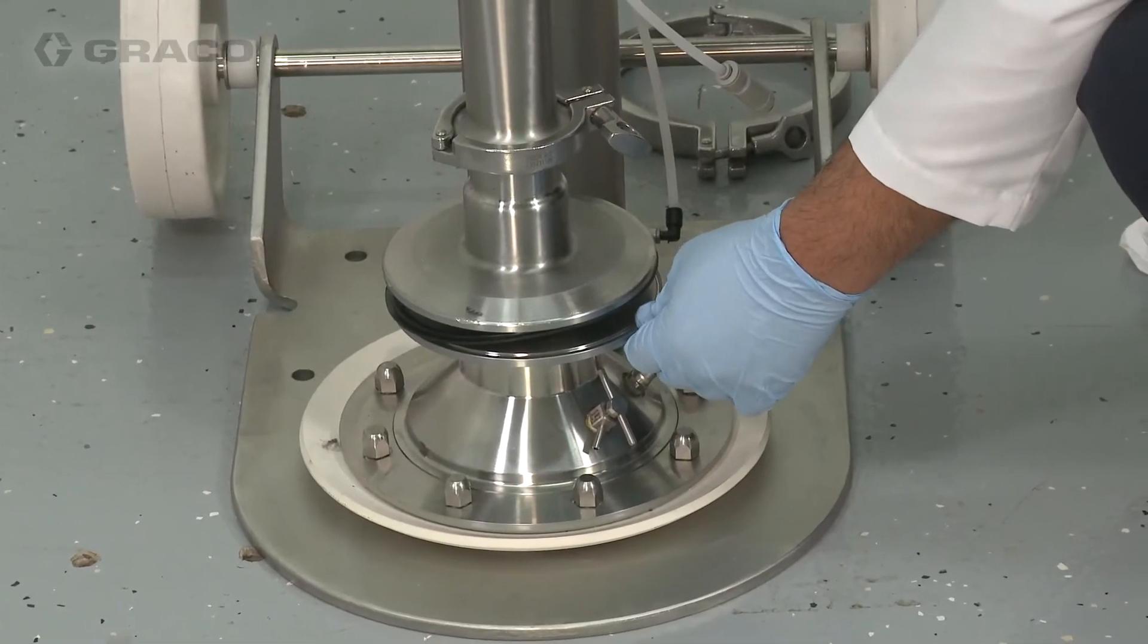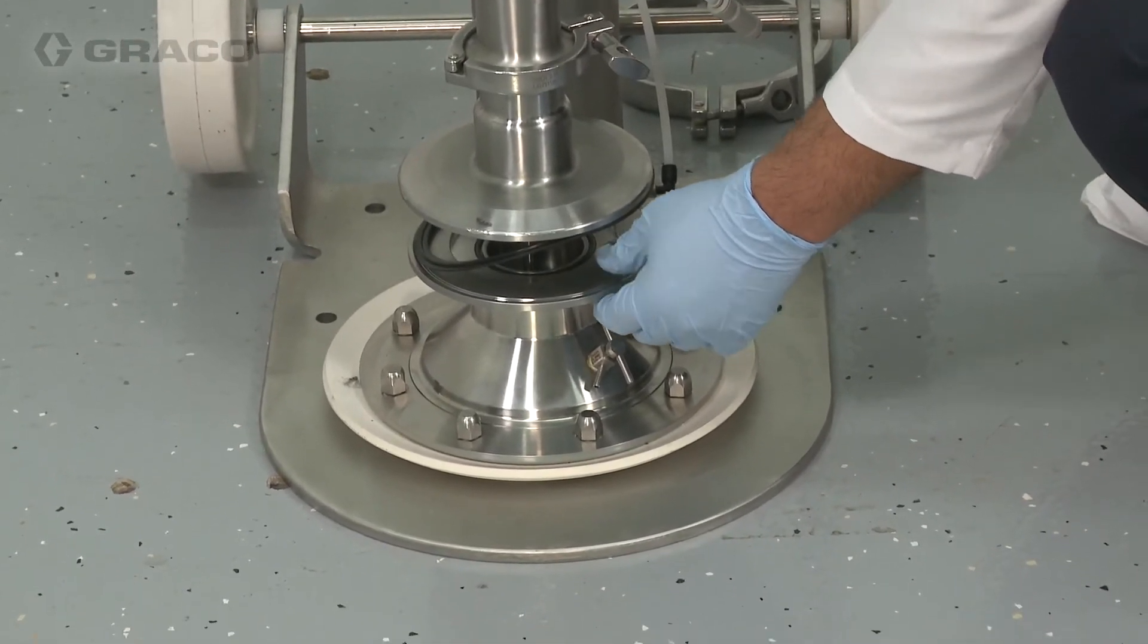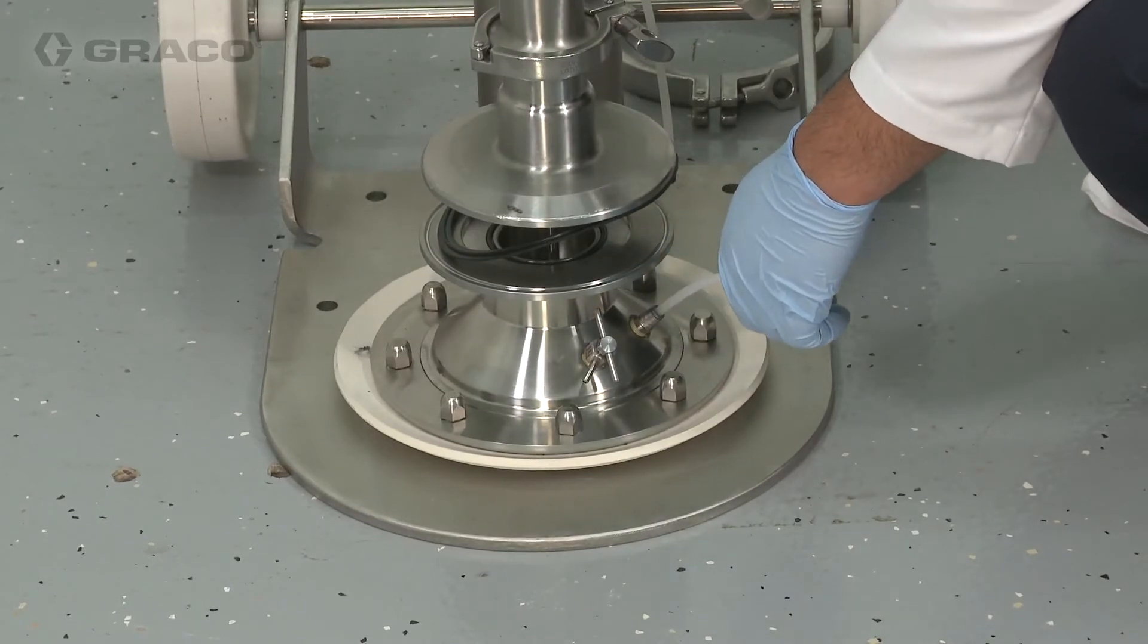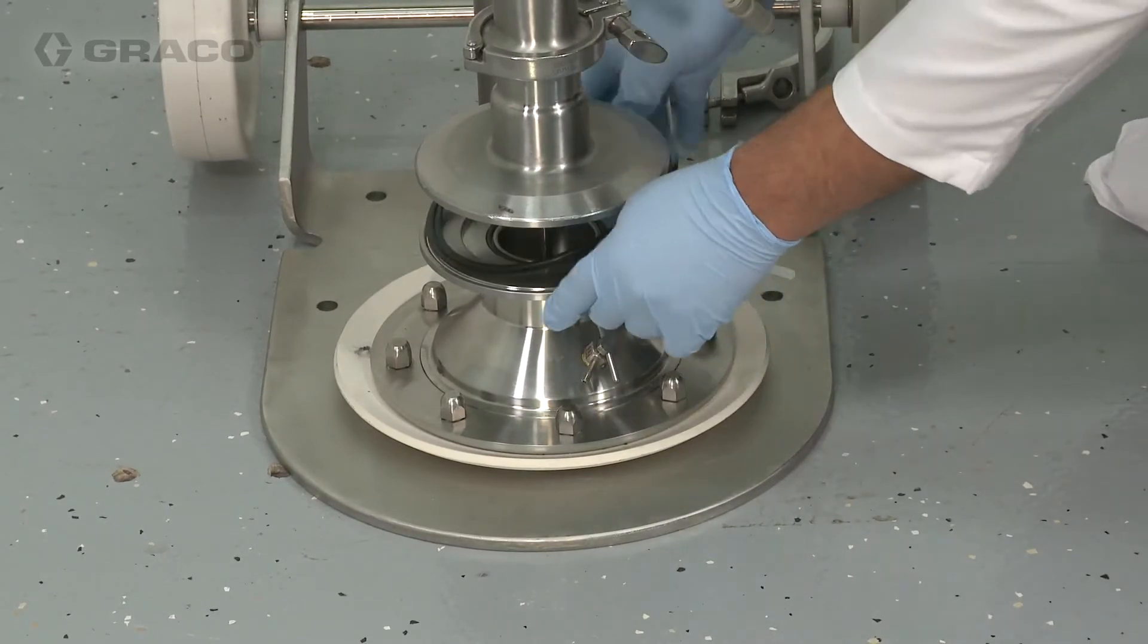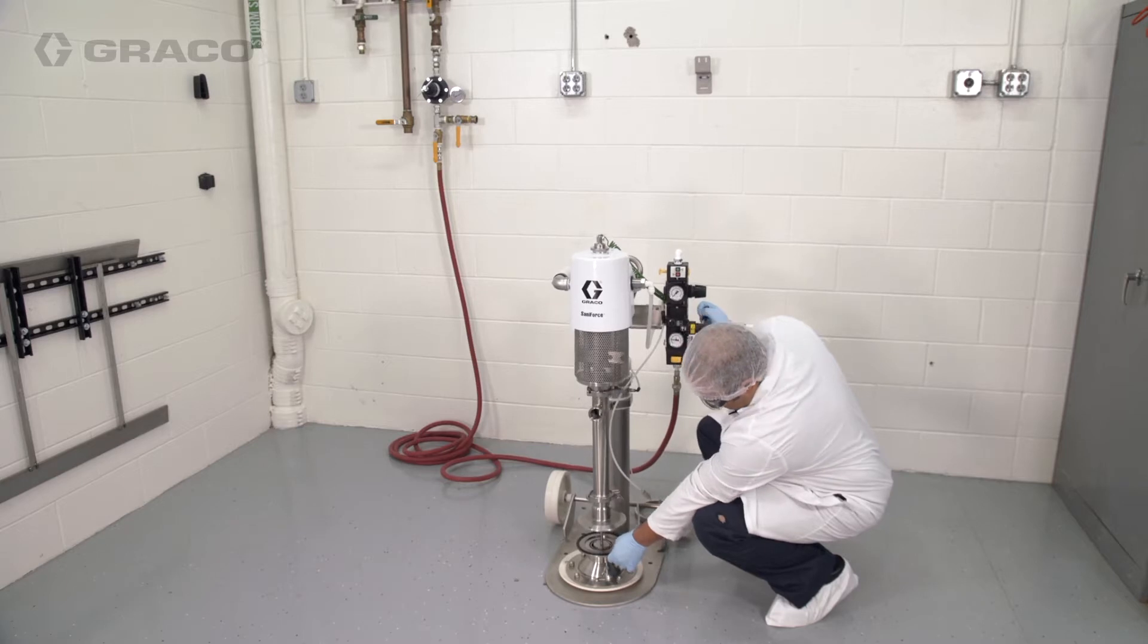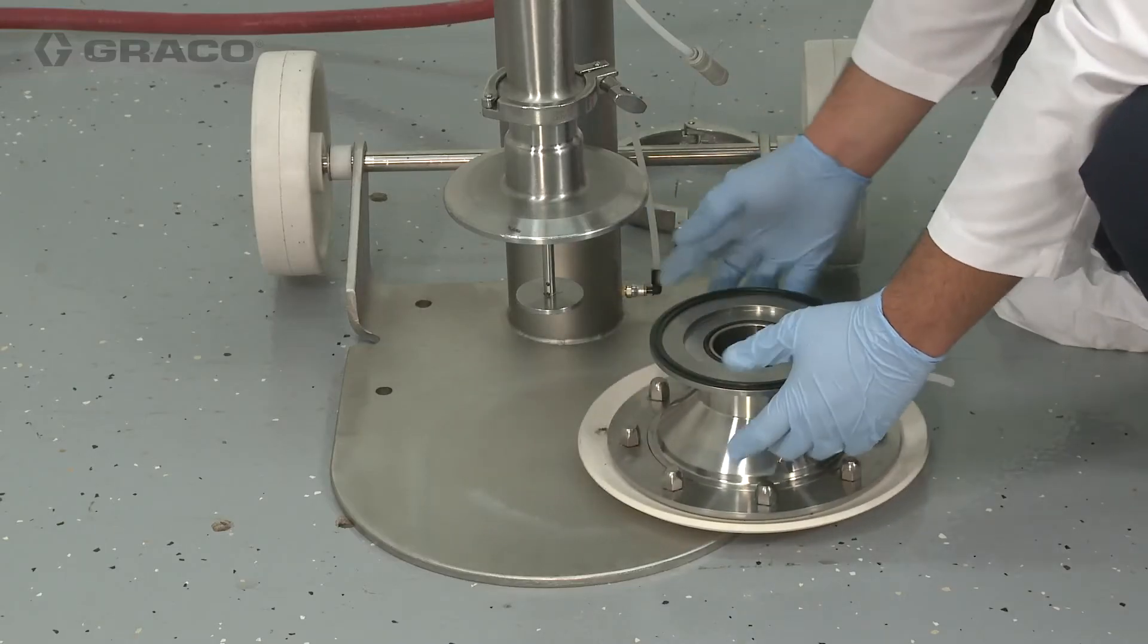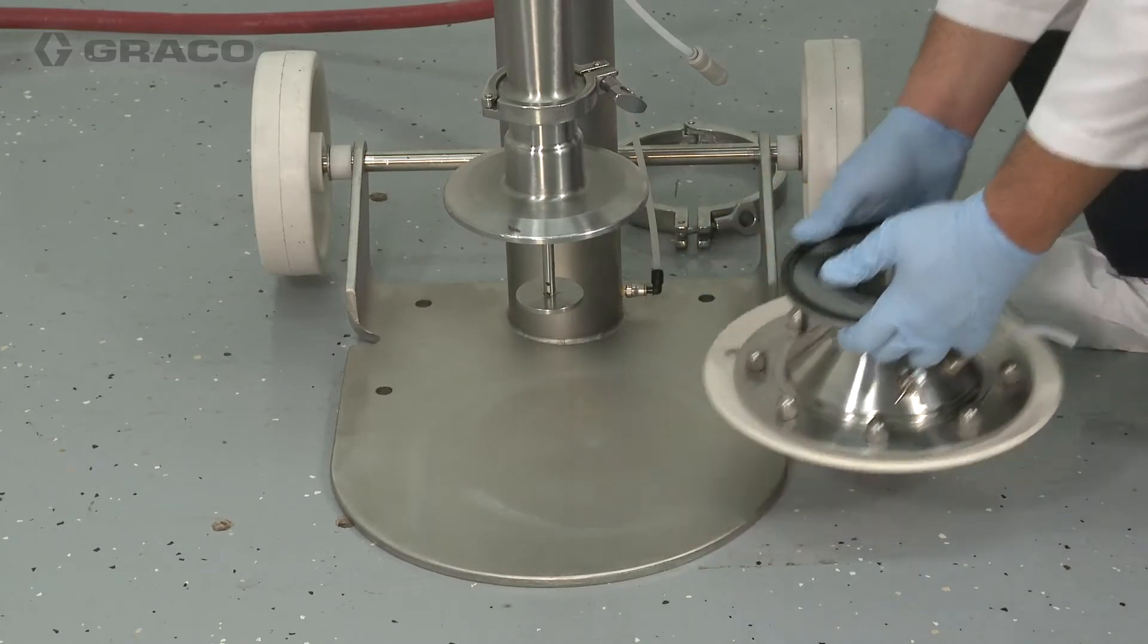When the platten is loose from the pump lower unit, continue raising the ram until the lower unit clears the platten. Move the ram director valve handle to neutral to stop raising the ram. Slide the platten out from under the pump lower and lower the ram as far as possible.